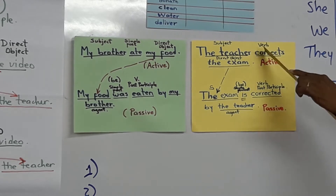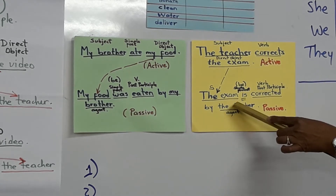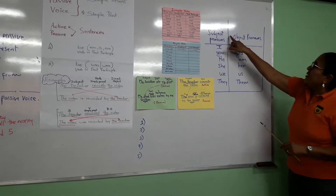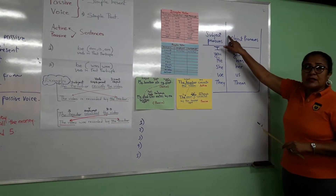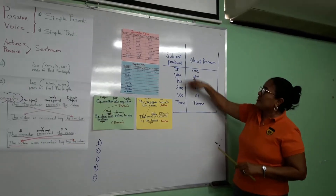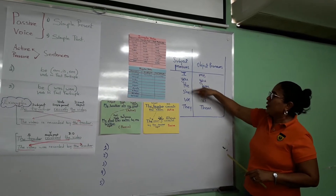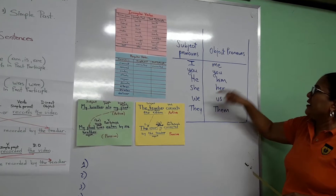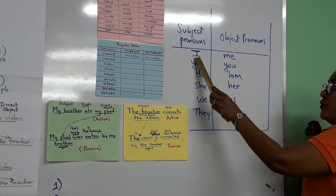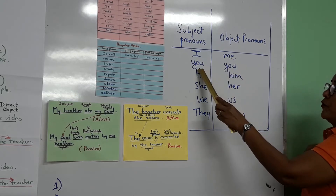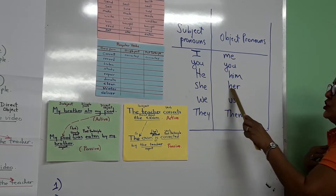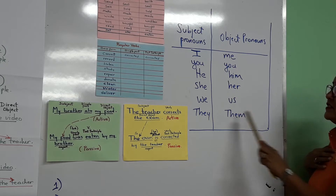It's very important to note that we have subject pronouns — I, you, he, she, we, they — but they also have object pronouns. For 'I' it is 'me'; for 'you' it is 'you'; 'he' becomes 'him'; 'she' becomes 'her'; 'we' becomes 'us'; and 'they' becomes 'them'.